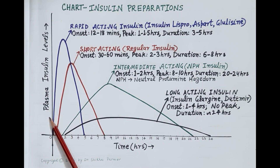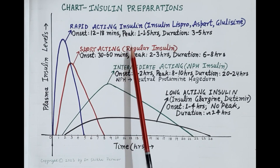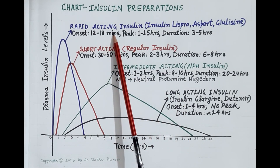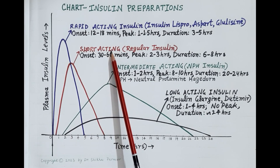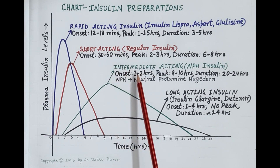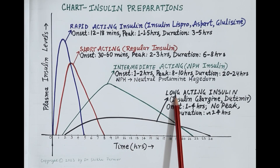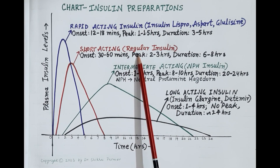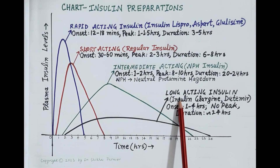There are four main types of insulin preparations: rapid acting insulin, short acting insulin, intermediate acting insulin, and long acting insulin. Rapid acting and short acting insulin preparations control post-prandial — that is, after meals — rise in blood glucose levels, while intermediate and long acting insulin preparations control glucose levels between meals and overnight.